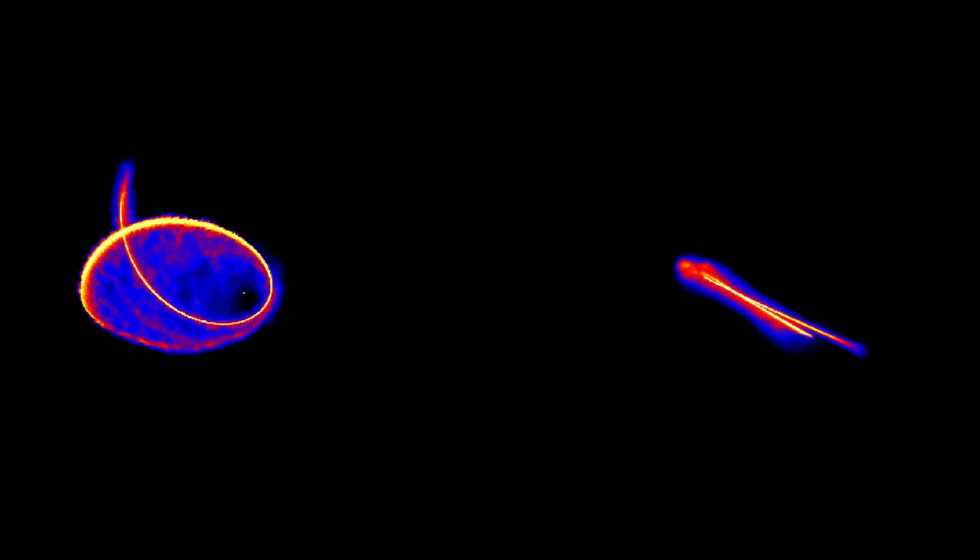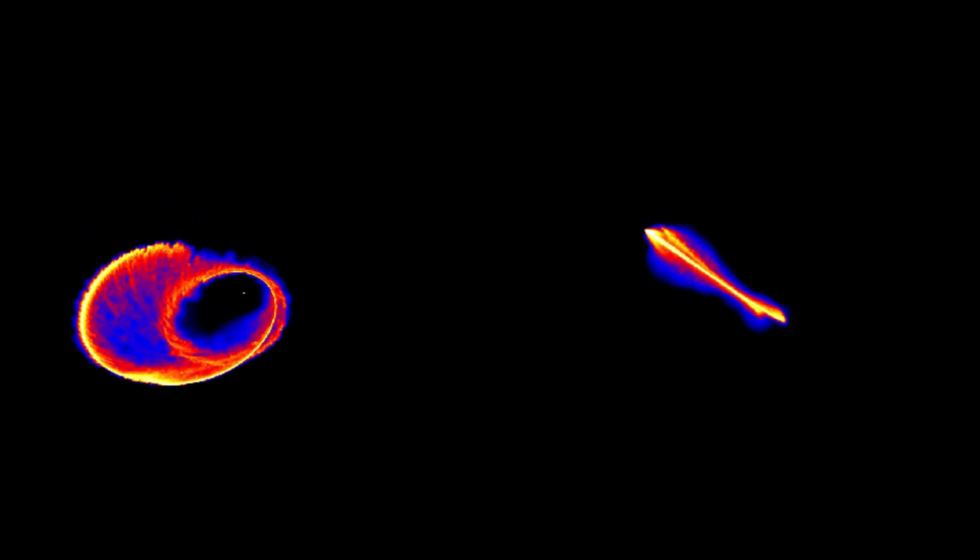So, if black holes are black, how do astronomers know they exist? Not directly visible, black holes must be detected by their effects on nearby stars, gas, or dust.